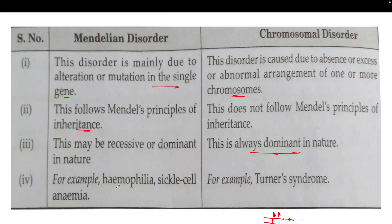Examples of Mendelian disorders include hemophilia and sickle cell anemia, while chromosomal disorders include Turner syndrome and Down syndrome. The basic difference is that Mendelian disorders occur at the gene level, while chromosomal disorders occur at the chromosome level — any changes in chromosomal arrangement lead to chromosomal disorder.